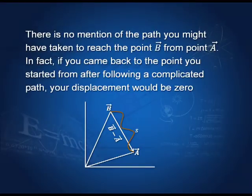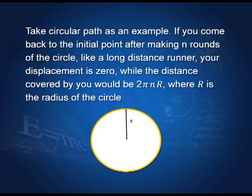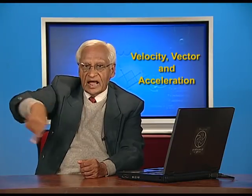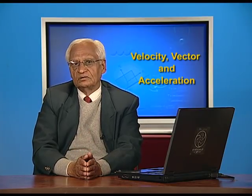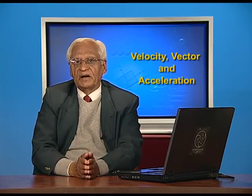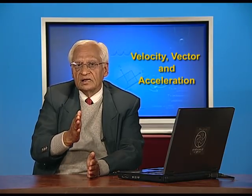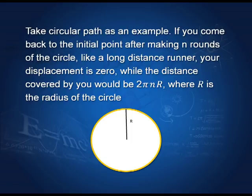That is what matters, not what path we take. If you go around a circle many times as a runner does in a race, you come back after one circular path to the same point, so your displacement is zero. But in one circle you have covered a distance equal to 2πr. If you went n times around this circle and came back to the same point, your displacement will be zero, but the distance covered would be 2πr times n, the number of rotations.